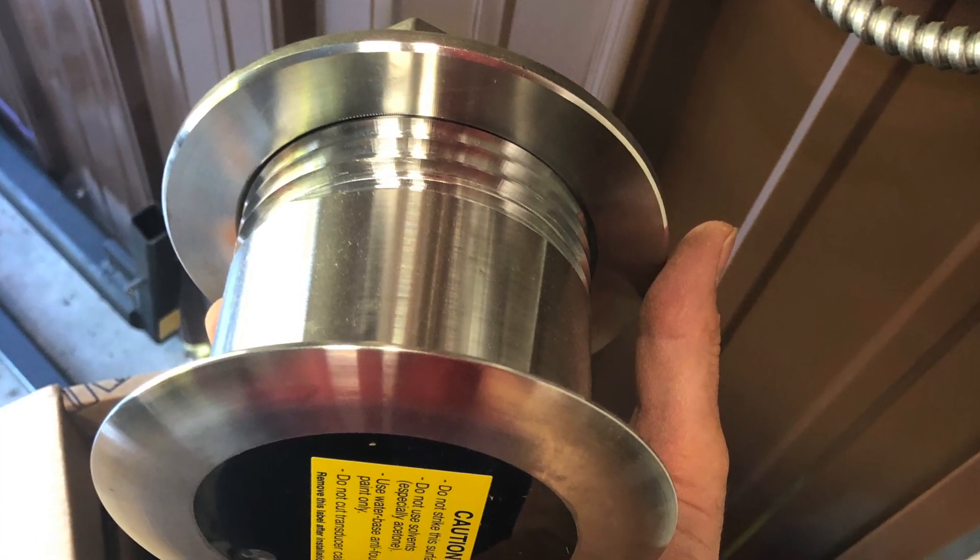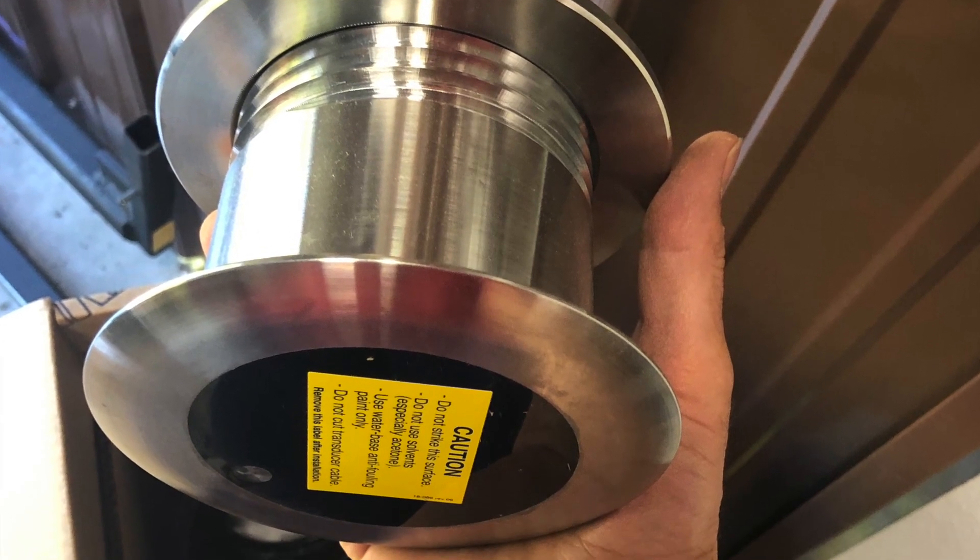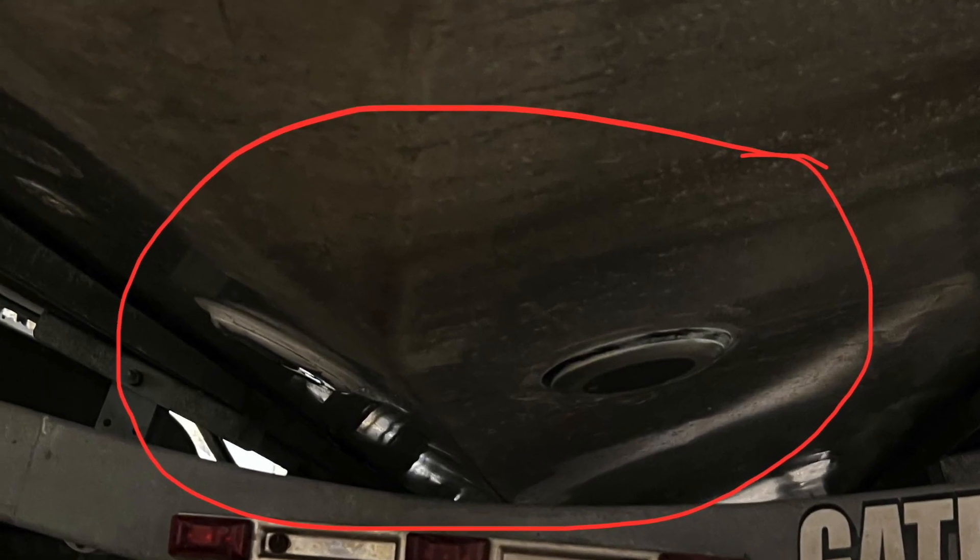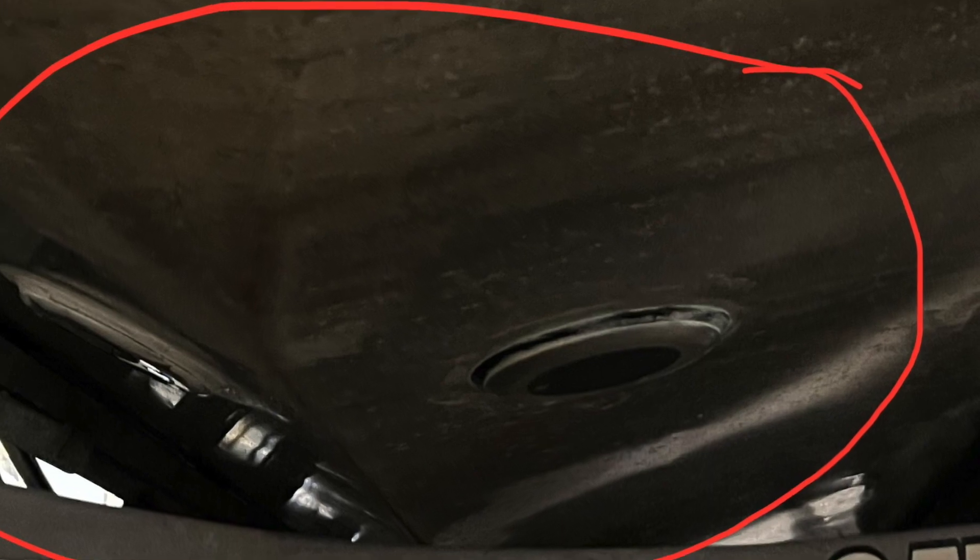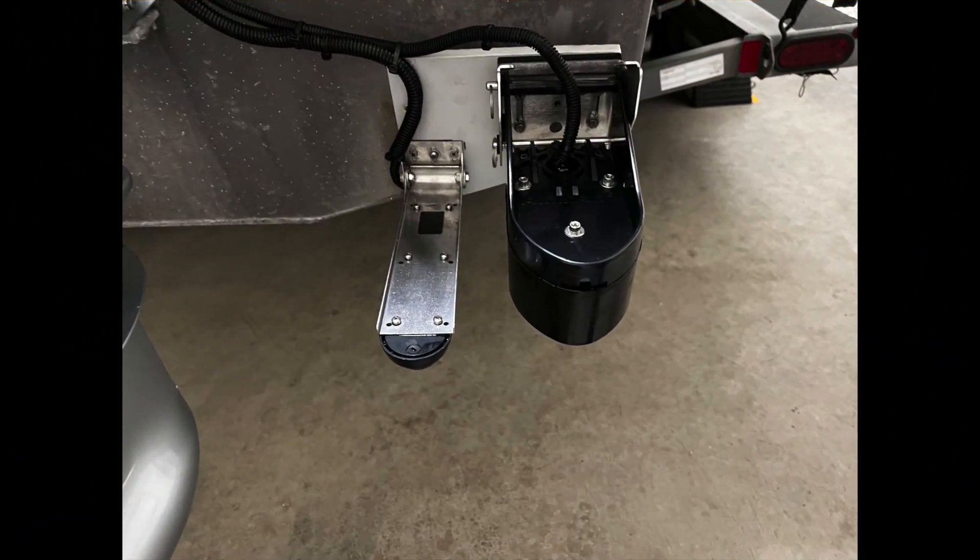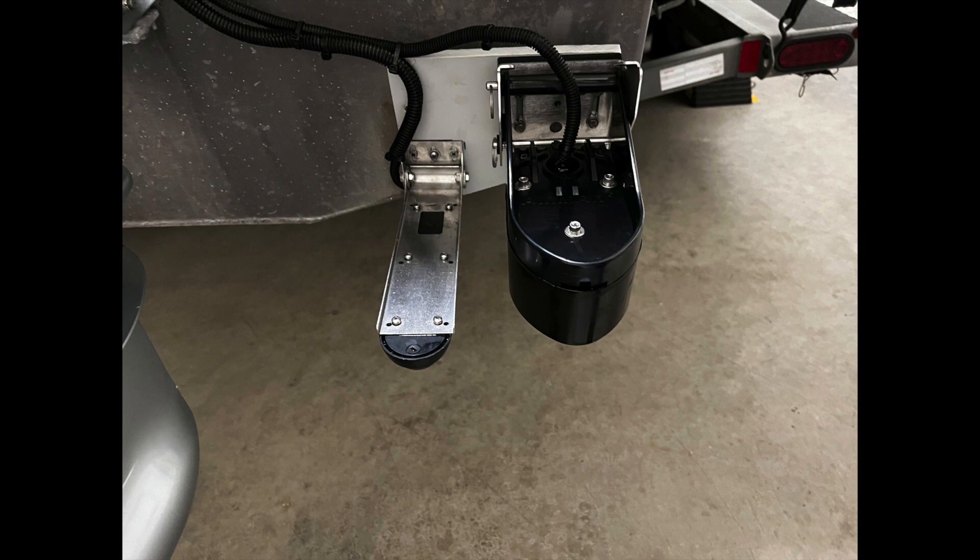Now a through-hull mounted transducer is going to give you the cleanest shot of water and the best performance, especially if you're going to want to target marking fish at high speed. A correctly installed transom mount transducer can do fairly well, again as long as it's mounted properly.